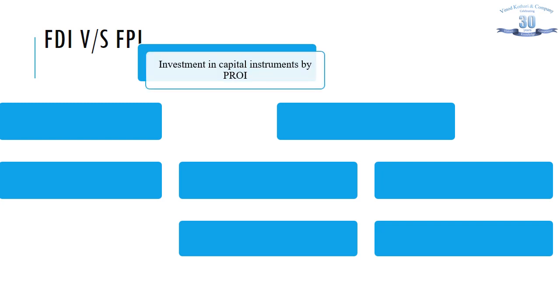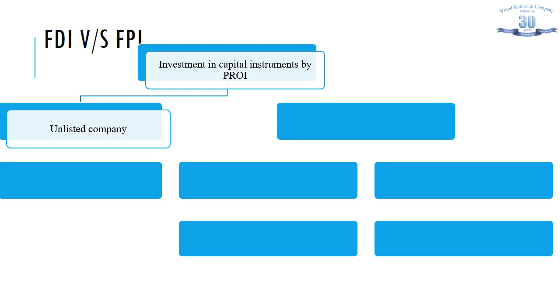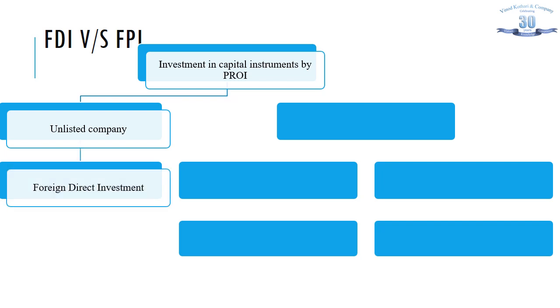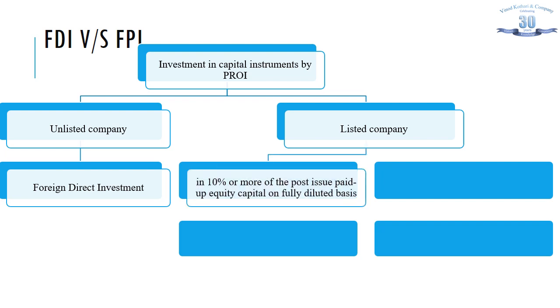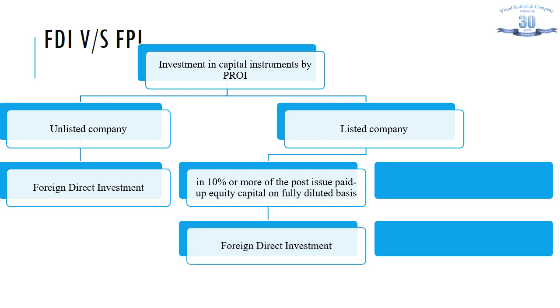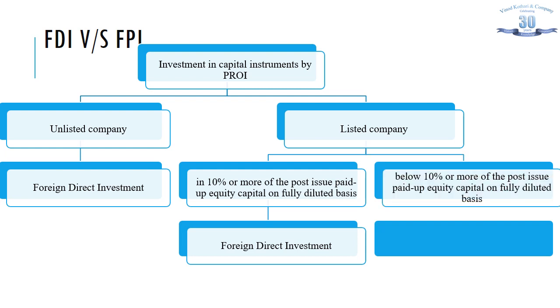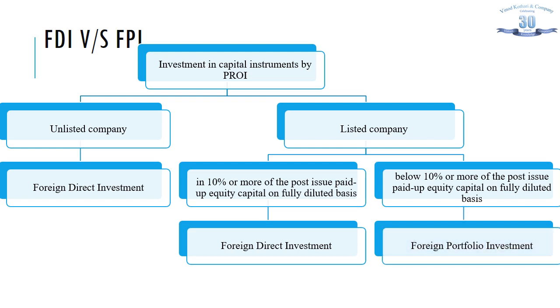FDI versus foreign portfolio investment (FPI): investment in capital instruments by a person resident outside India in an unlisted company is always regarded as FDI. For a listed company, if the investment accounts for 10% or more of the diluted equity capital, it is regarded as FDI. If it is below 10% of the post-issue paid-up capital on a diluted basis, it is regarded as foreign portfolio investment.